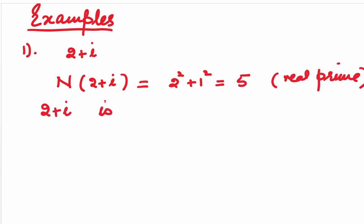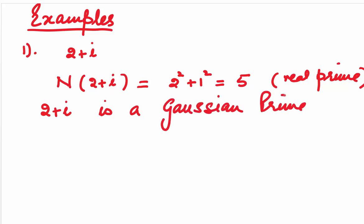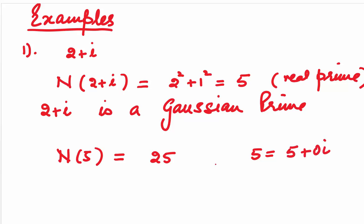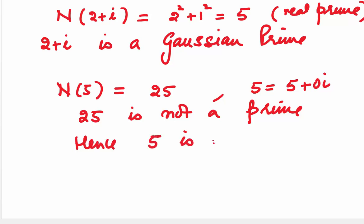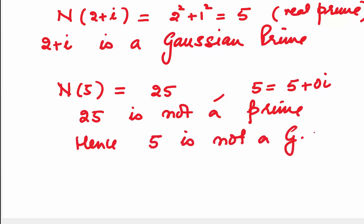So 2 plus i is a Gaussian prime. But what about 5? If we find the norm of 5, we write 5 as 5 plus 0i, so the norm is 5 squared which equals 25. Since 25 is not a prime, 5 is not a Gaussian prime. So you can see that the vice versa is not true.